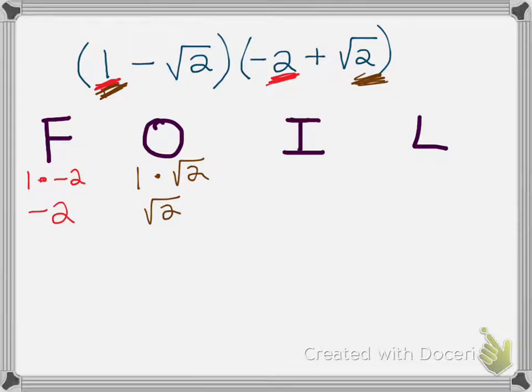Now my inner is basically the two terms in the middle, which is negative square root of 2—always take that sign in front of the number—and the negative 2. So I'm multiplying negative square root of 2 times negative 2.